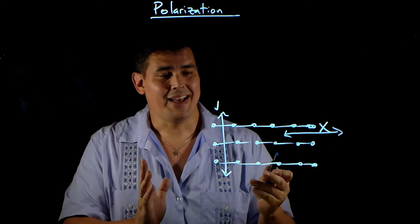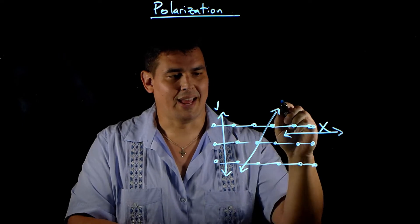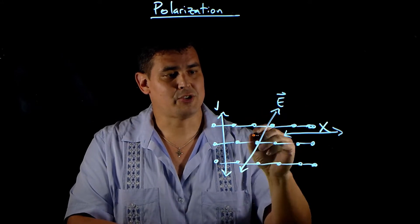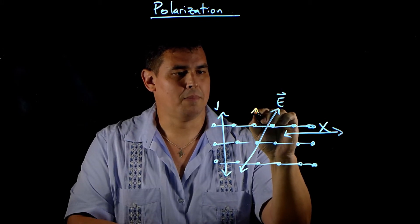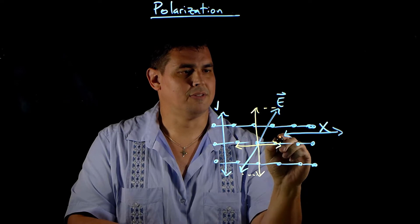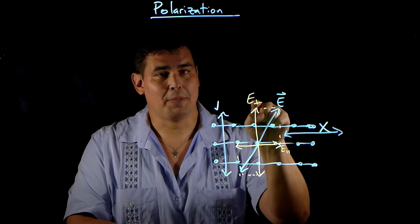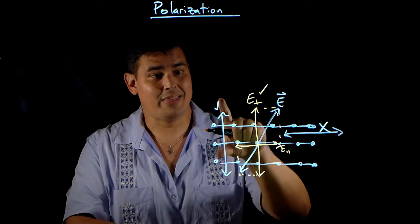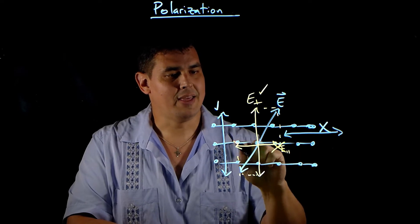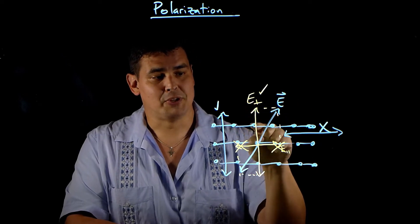Not every electromagnetic wave is going to be oriented in one of those two directions — you could have a bunch of different random polarizations. So let's say I have one oriented at an angle. Since electromagnetic fields are vectors, I can break this electric field into a component that's vibrating perpendicular to the chains and a component that's vibrating parallel to them. I know the perpendicular one is going to get through, and the parallel component is going to get absorbed. So some light gets through, but your original vector comes out a little bit less in intensity.